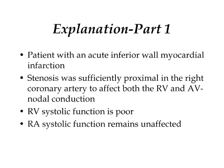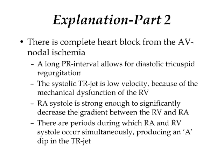This is a gentleman who came in with an acute inferior wall myocardial infarction, and his stenosis was sufficiently proximal in the right coronary artery to affect both the RV as well as conduction through the AV node. His RV systolic function is poor; however, his right atrial systolic function remains unaffected. Because the AV node has become ischemic, he has complete heart block, and the bright echodensity in the echocardiogram is that of a temporary pacemaker.